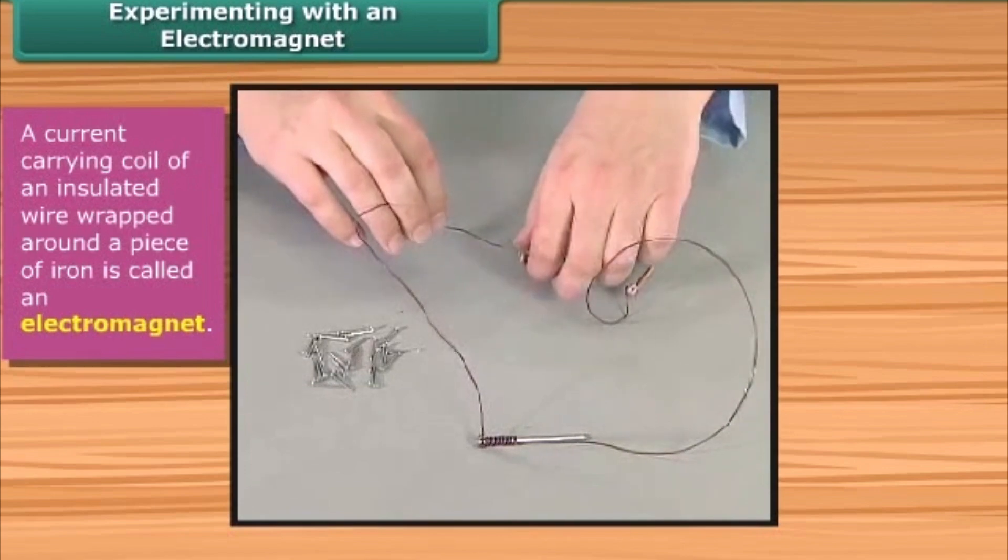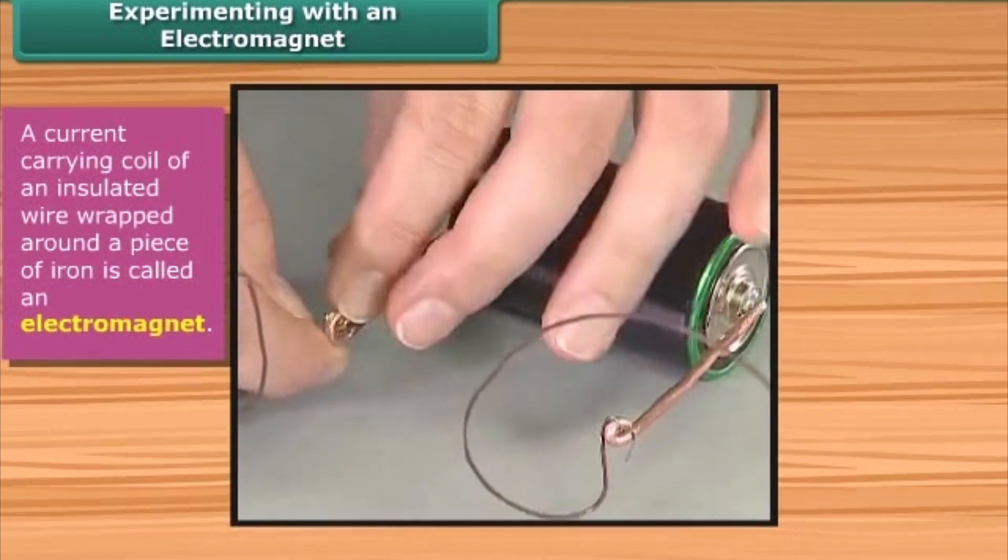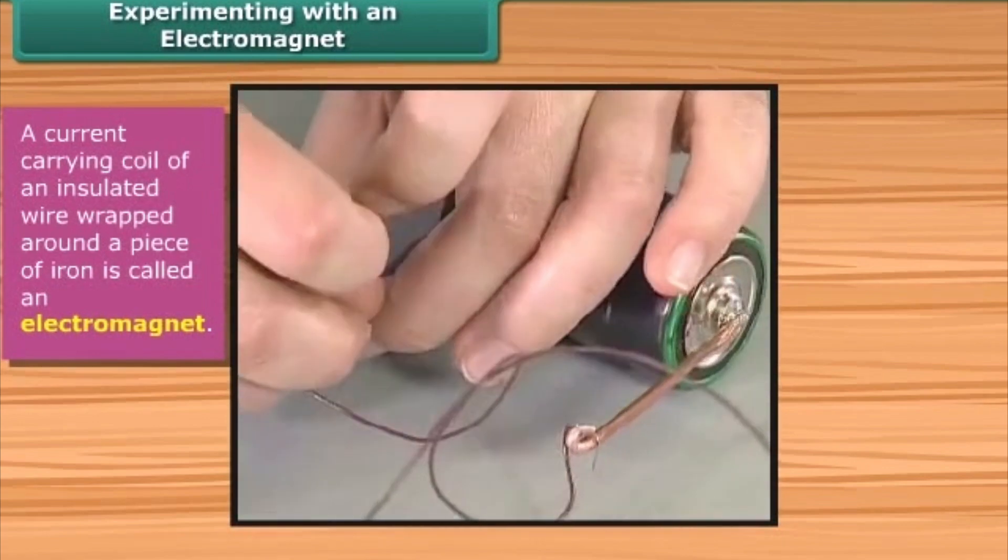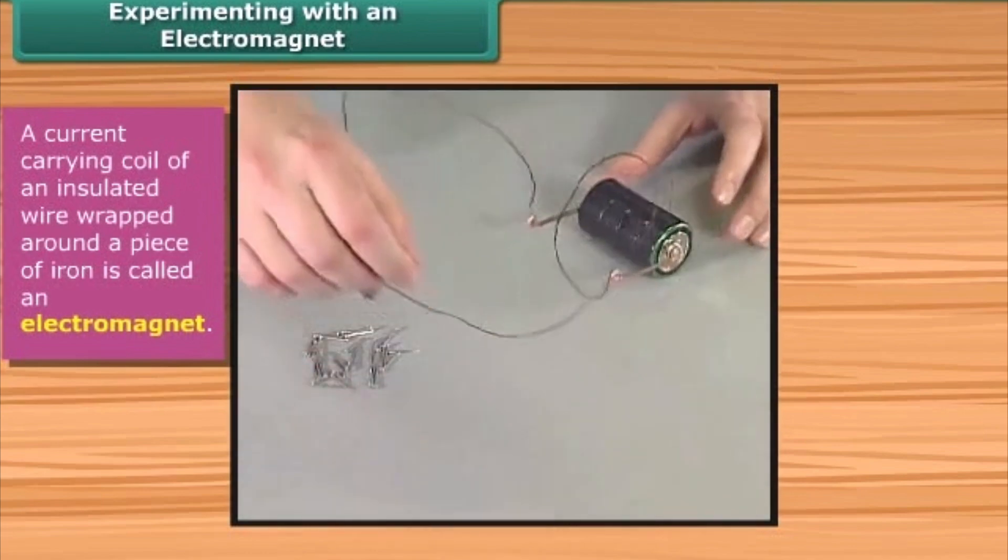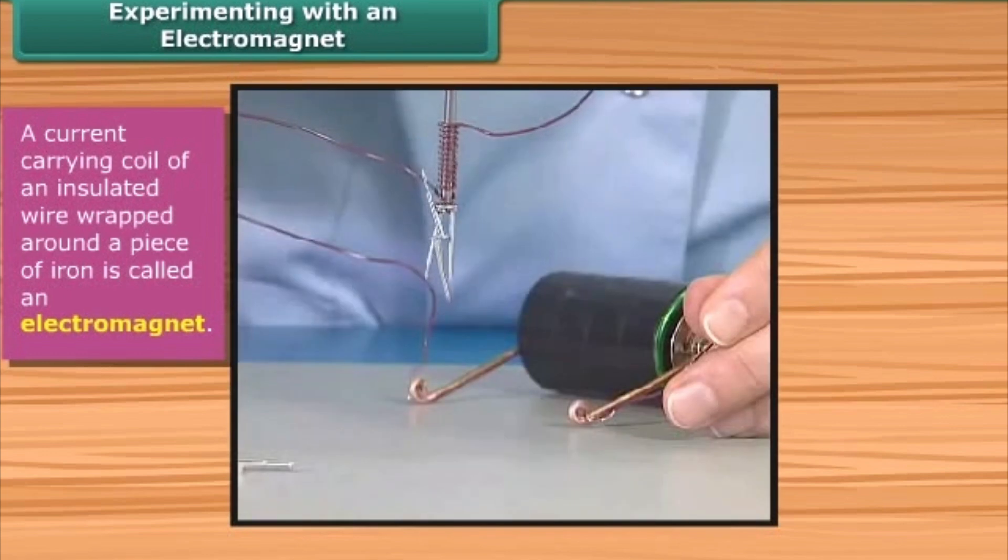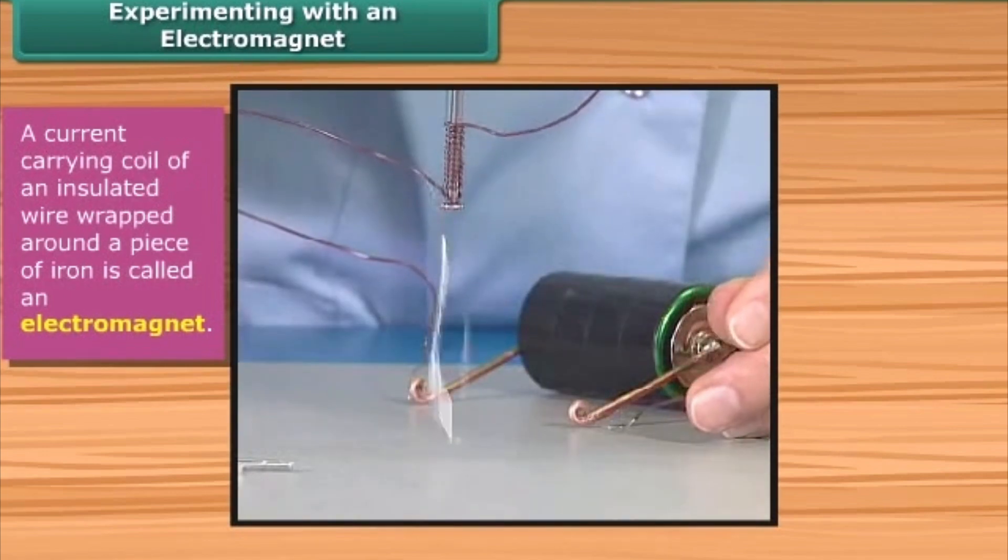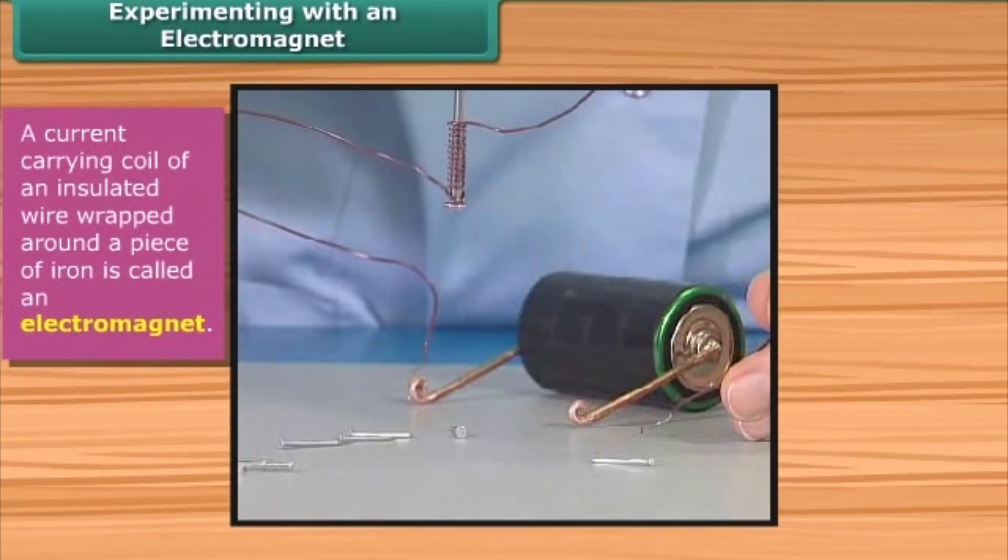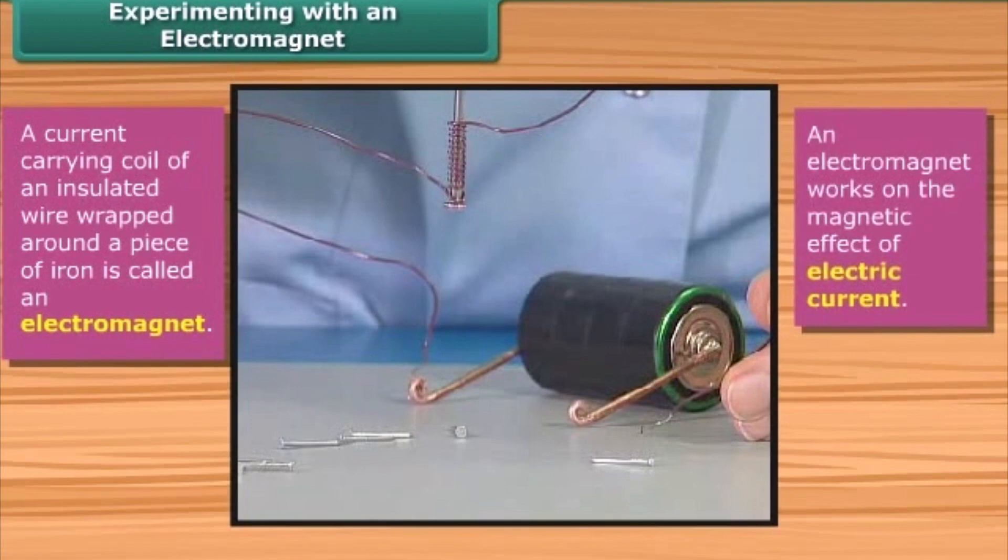We see that the pins cling to the tip of the nail. When the current is switched off, the pins no longer are attracted to the nail. The coil in the above activity behaves like a magnet when electric current flows through it. When the electric current is switched off, the coil generally loses its magnetism. Such coils are called electromagnets. Thus an electromagnet works on the magnetic effect of electric current.